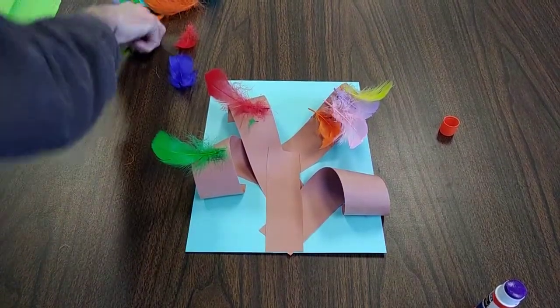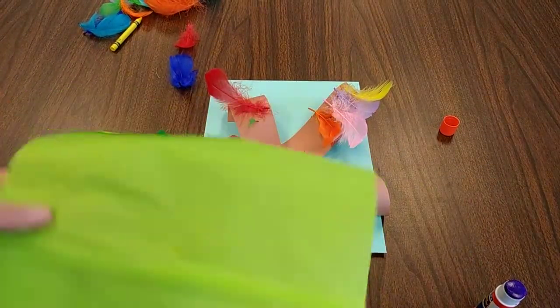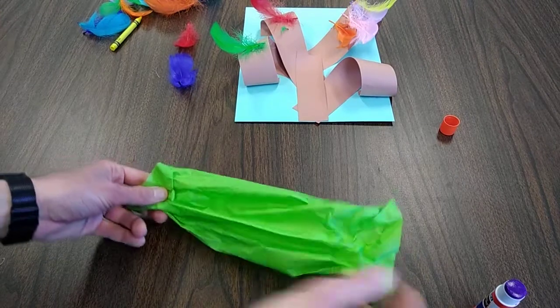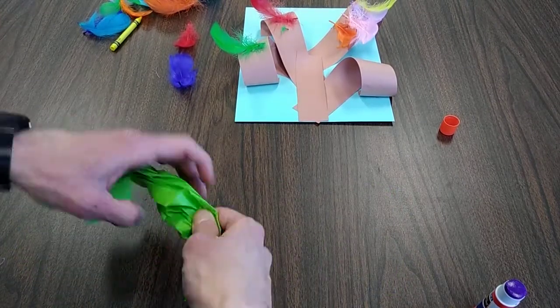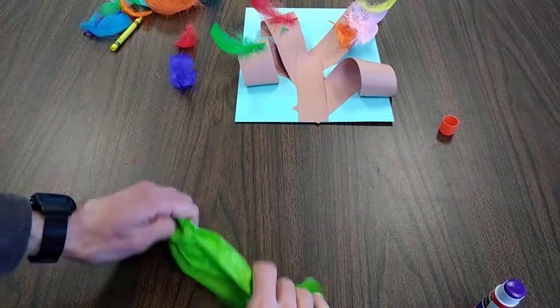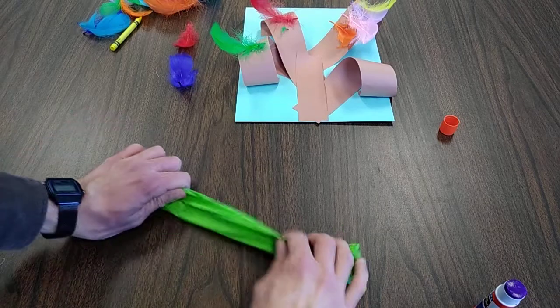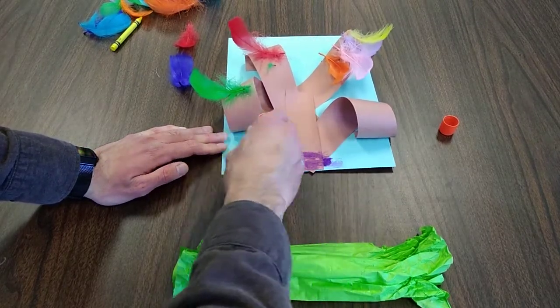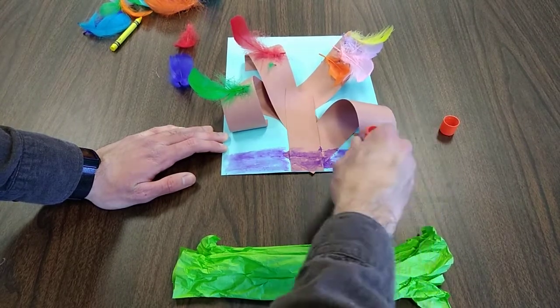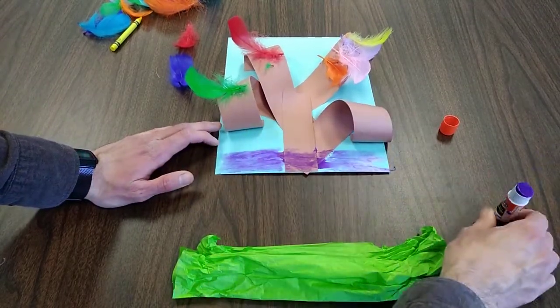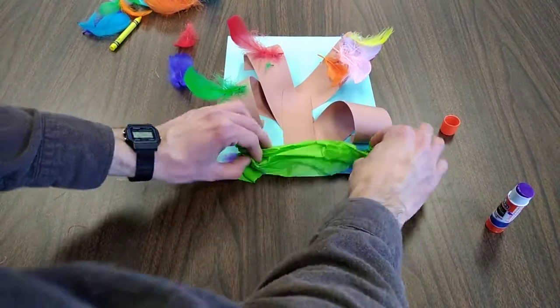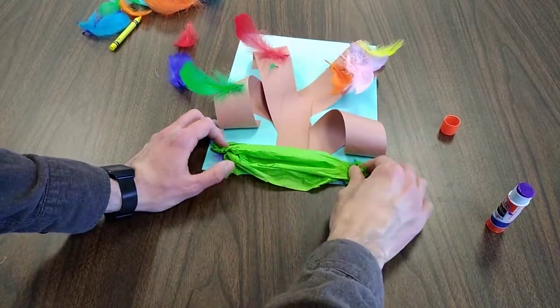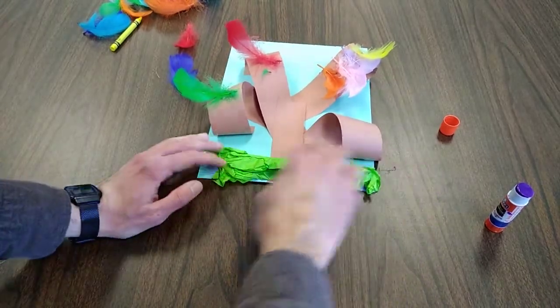What we're going to do is use this green tissue paper as our grass. So we're going to take the paper, crumple it up, try to keep the long shape, maybe twist it up a little bit, just like that. Nice. You're just going to apply glue along the whole bottom length of the paper. Nice.